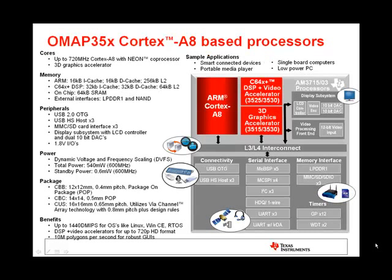The OMAP-35X generation features ARM Cortex-A8-based devices with four variants: the OMAP-3503, OMAP-3515, OMAP-3525, and OMAP-3530. The ARM core goes up to 720 MHz, and a 3D graphics accelerator is available only on the OMAP-3515 and OMAP-3530. If 3D graphics or the C64x+ DSP and video acceleration are not needed, the OMAP-3503 is the best fit. These devices target portable navigation, portable media players, advanced consumer electronics, digital video cameras, and point of sale applications.